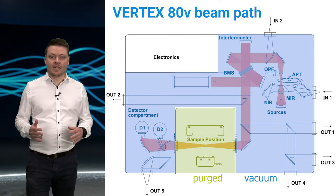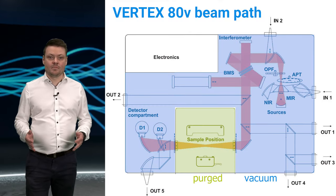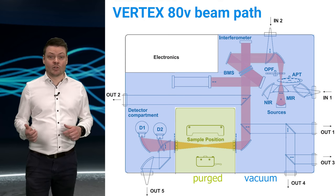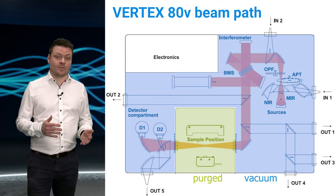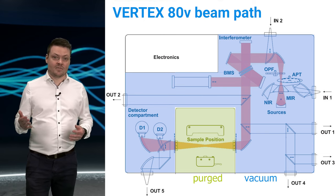Vacuum systems even offer advantages for samples that can't be brought into the vacuum. An example for that would be protein studies in life science. These samples are typically in aqueous solution and therefore can't be brought into the vacuum. However, in Vertex systems it is possible to just evacuate the optical compartment. This way you still have most of the beam path under vacuum conditions. Protein bands overlap with water bands, so the reduction of the water influence is crucial here to detect small signals and to detect subtle changes over time.